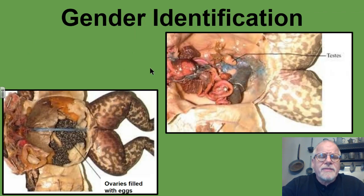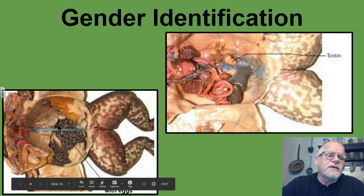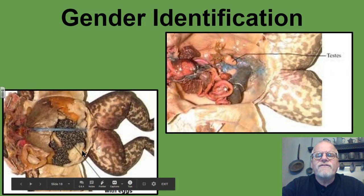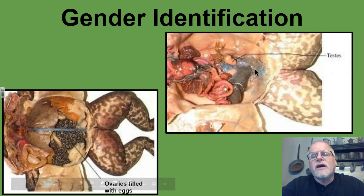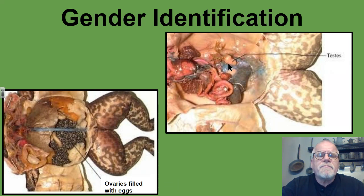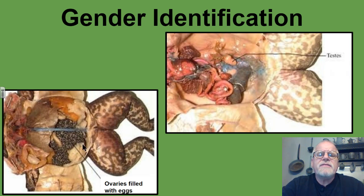We can tell the gender of the frog from the outside by looking at the thumb pads, but on the inside it's much easier to tell. Here you can see a frog filled with eggs, with a little area called the oviduct — so this, of course, is a female. In this case, there are no eggs, and right here are some testes — so this, of course, is a male. The sperm produced by the male and the eggs produced by the female are all removed through the cloaca.